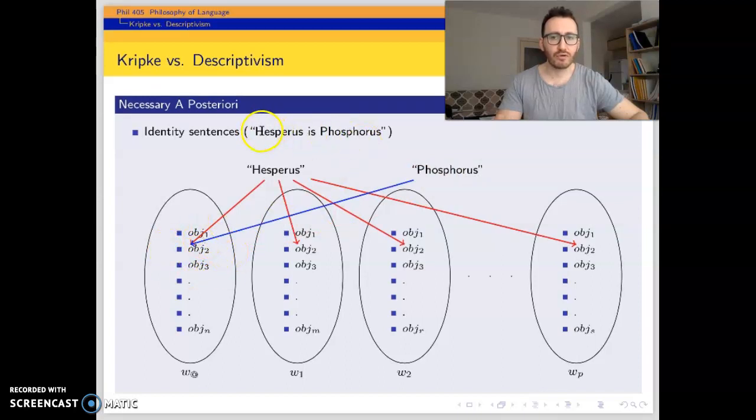Phosphorus is also a proper name and we know that in the actual world Hesperus and Phosphorus refers to the same object. This is the truth condition of Hesperus is Phosphorus. When you say Hesperus is Phosphorus, what you mean is that these two proper names refer to the same object. But since Phosphorus refers to the same object in all possible worlds, which means that Hesperus is Phosphorus in all possible worlds because they refer to the same objects in all possible worlds. This is the reason behind that identity sentences are necessary. And we already know that epistemologically they are a posteriori because we need some empirical evidence to believe that Hesperus is Phosphorus.